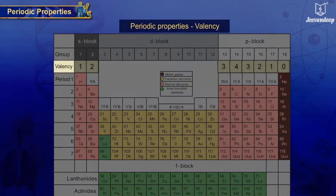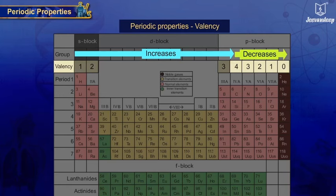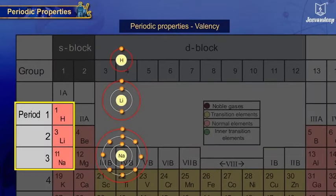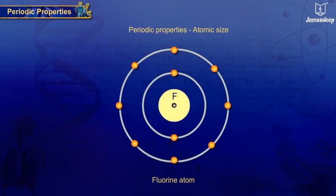Gradation of valency in a period: valency increases from one to four for the second and third period, and then decreases from four to zero when going from left to right in the periodic table. Gradation of valency in a group: all element atoms have the same valency because of the same number of valence electrons.